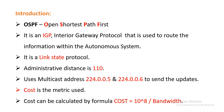The administrative distance is 110. Administrative distance is a feature used in the router to select the best path when two or more routes are available to the same destination from two different protocols. For example, if OSPF has an administrative distance of 110 and there is another route to the same destination using RIP, the OSPF route will be preferred because OSPF's administrative distance of 110 is lower than RIP's 120. The lower administrative distance is preferred. OSPF uses multicast addresses 224.0.0.5 and 224.0.0.6 to send its updates.